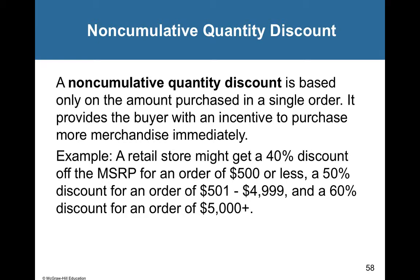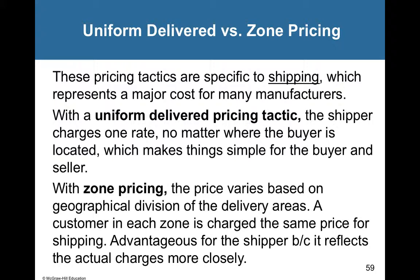The last business pricing tactic is uniform delivered versus zone pricing, both of which pertain to shipping. Uniform delivered pricing means a seller charges one rate regardless of where the buyer is located — whether California or Florida, you pay the same shipping price. Zone pricing varies based on the geographical division of delivery areas, so shipping within a certain number of miles costs one amount, while shipping to California or internationally to Hong Kong costs more.